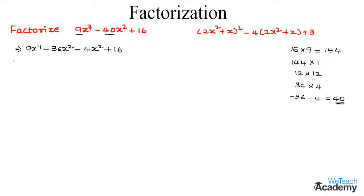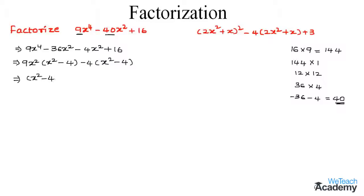From the first two terms, let us take 9x square as a common factor; then we get x square minus 4. Again, by taking minus 4 as a common factor we get x square minus 4. Now take the group x square minus 4 as a common factor; then we get x square minus 4 into 9x square minus 4.